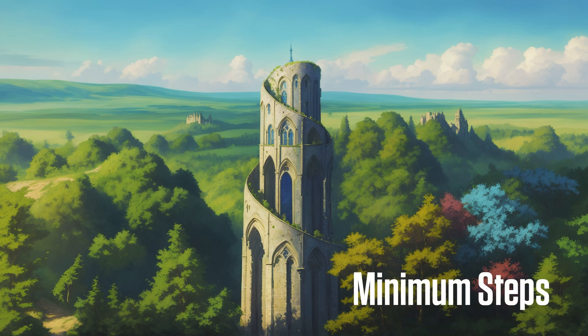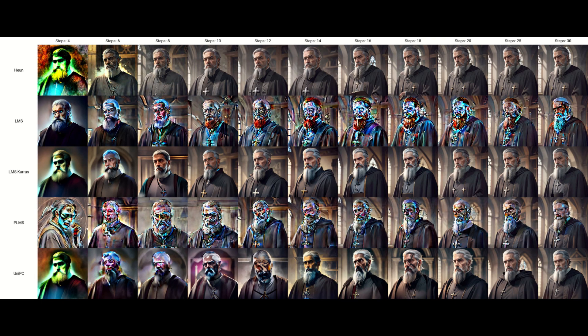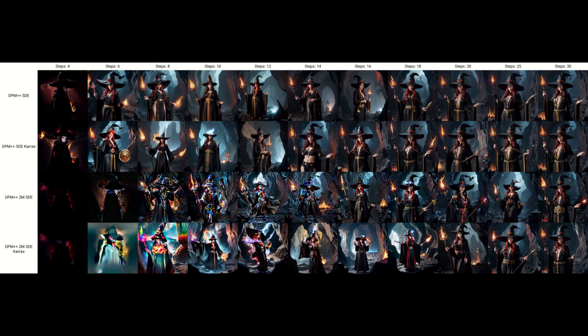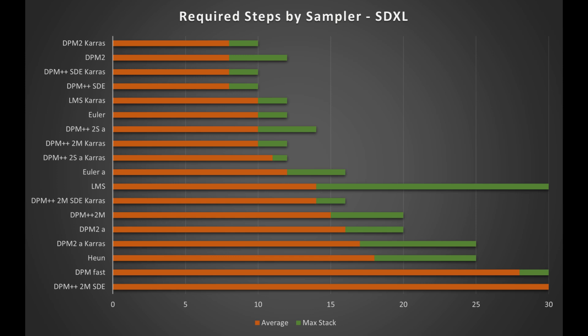Another important variable is how many steps are needed to get a decent looking output. Most samplers consistently get decent results within 20 steps, though there are some slowpokes like DPM Fast and PLMS which need more than 30. In general, even if you can get a decent image in 10 to 12 steps, you're still going to get a boost in quality by going up to 20 or 30. In these charts, I show the average and maximum steps needed to get decent results with each sampler, out of a sample size of 9. Don't view these numbers as precise, but they should give you a ballpark idea for which samplers need the fewest steps.